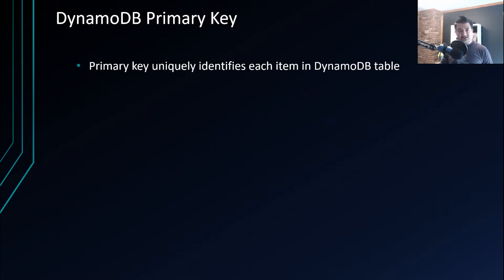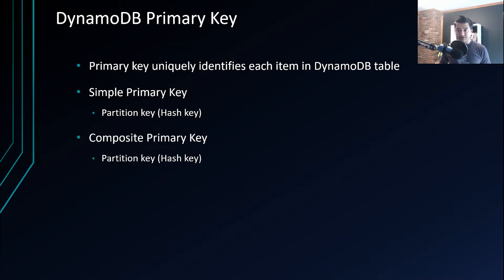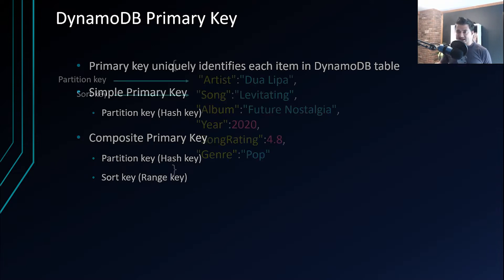Primary key uniquely identifies each item in a DynamoDB table. There are two types: the simple primary key, comprised of only one attribute called the partition key (also known as hash key), and the composite primary key, made of two attributes — the partition key and the sort key, also known as the range key.